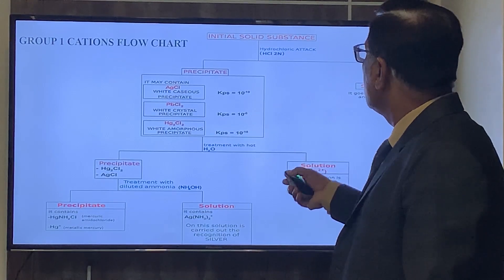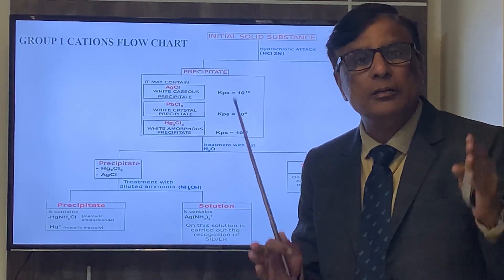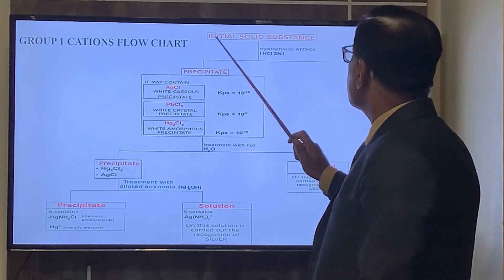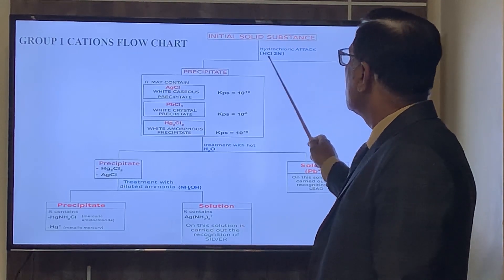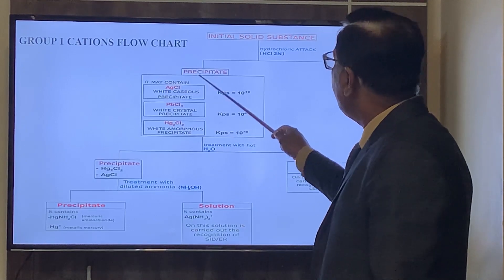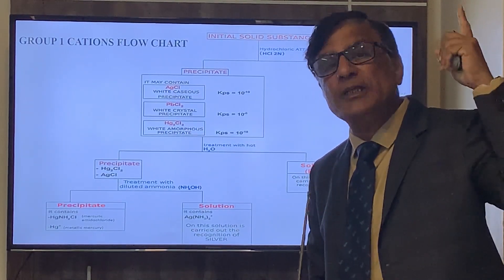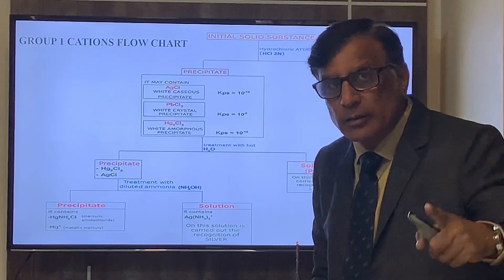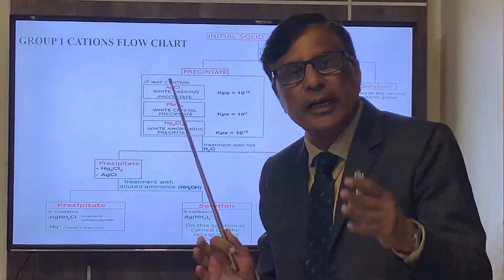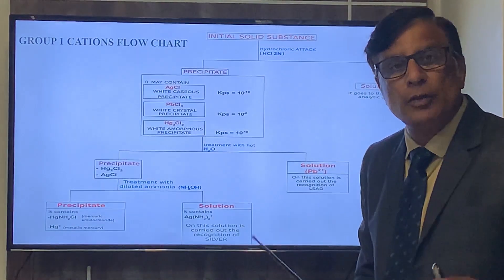If you have the initial solid substance — that means if you have the precipitates from the A group — then the initial solid substance must be acidified with 2 molar HCl. If there are precipitates, those precipitates of Group 1 must be acidified with 2N hydrochloric acid, and then we have to filter the solution with precipitates.